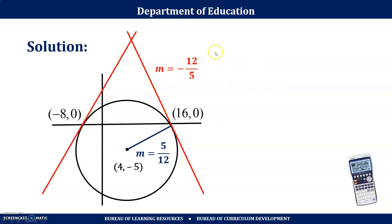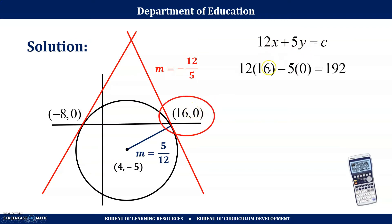Since I have slope −12/5 and point (16, 0), the form of the line is 12x + 5y = c. To get c, plug in (16, 0): 12(16) − 5(0) = 192. Therefore the second tangent line equation is 12x + 5y = 192.